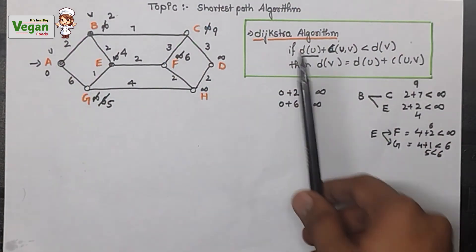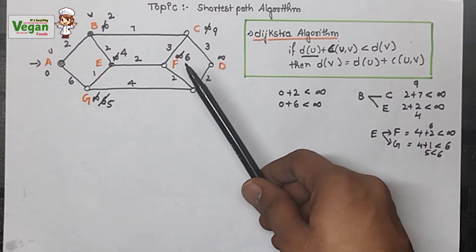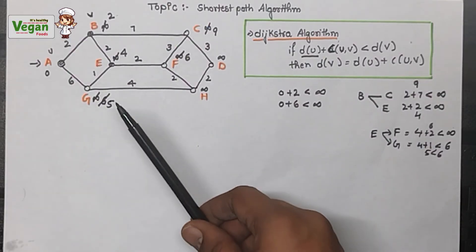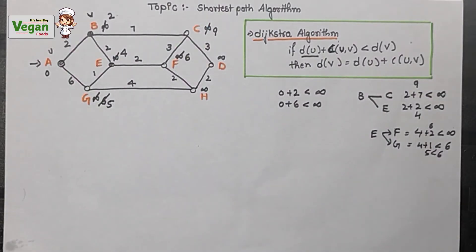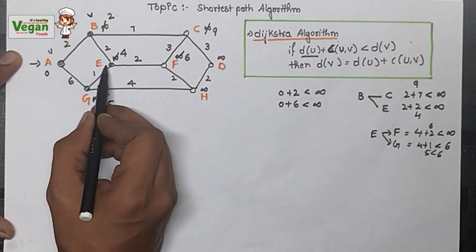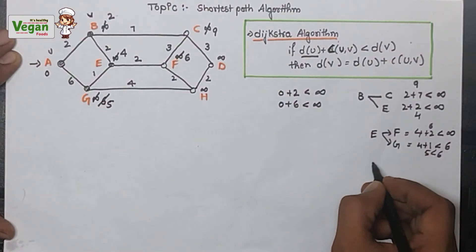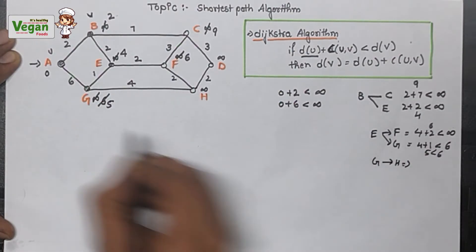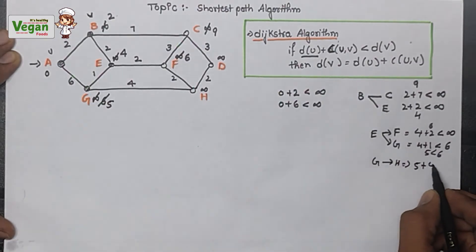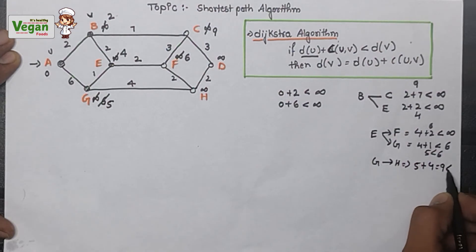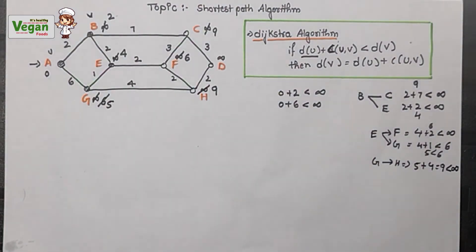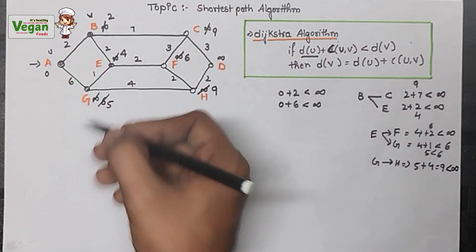Now we know C = 9, F = 6, and G = 5. The smallest is G with 5, so we select router G. G can only go to H. From G to H: G cost 5 + edge cost 4 = 9, which is less than H's value of infinity, so we strike out infinity and write 9 for H. Router G is now done.